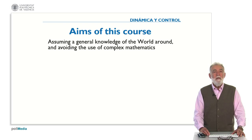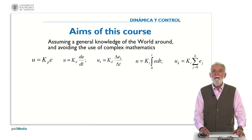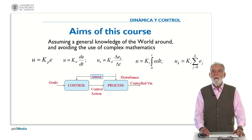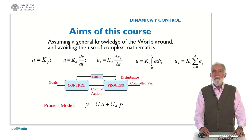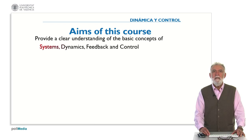We avoid the use of complex mathematics. The mathematics we have been using is just the proportional, derivative, or integral actions in the case of the controllers. And in the case of more complex systems, we define the model of the process by means of the operator G, which is an operator providing the output given the input. Based on this, we provide a clear understanding of the basic concepts of systems, dynamics, feedback, and control.